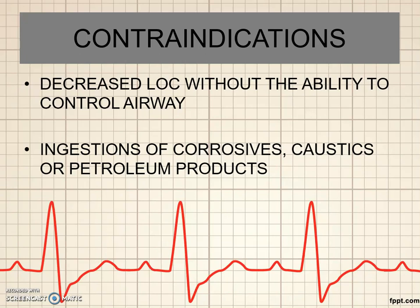The contraindications: of course with anything we're going to put in the mouth, if they have a decreased level of consciousness, if they do not have the ability to control their airway or the ability to swallow on command, then obviously we could not give this for fear of aspiration. The contraindications also include any type of alkalis, acids, corrosives, caustics, or petroleum products. Basically, in a nutshell, if you can drink it and it burns, that would be a contraindication — it's not going to work and in a few instances could actually make it worse. We're going to typically stick with solid-type toxins.